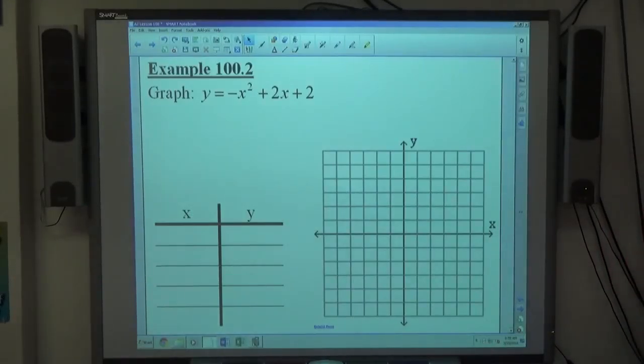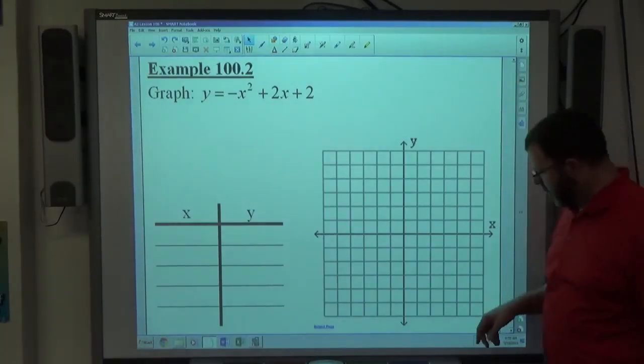Example 2, graph y equals negative x squared plus 2x plus 2. Notice once again, x squared, y first, so that's going to be a parabola, but you should expect to get one of these curves.